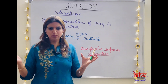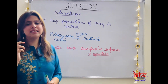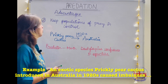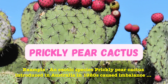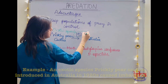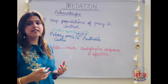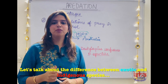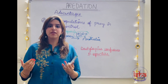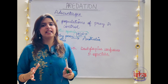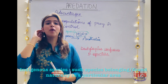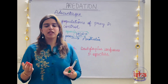Predation keeps the population of the prey in control. If a predator disappears from an ecosystem, the number of prey will increase enormously. An example of this was observed when an exotic species of prickly pear cactus was introduced in the 1920s in Australia. An exotic species is one that does not naturally belong to a particular area, unlike an indigenous species which naturally belongs there.